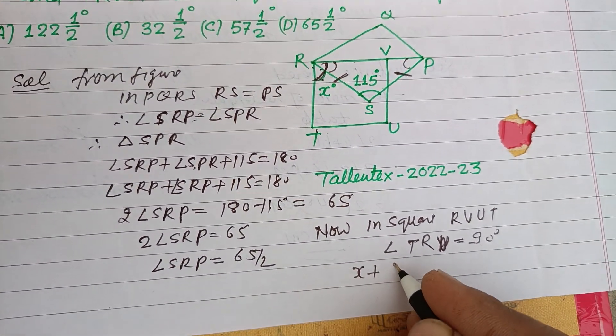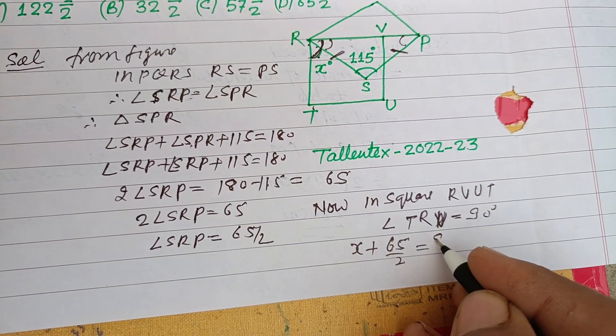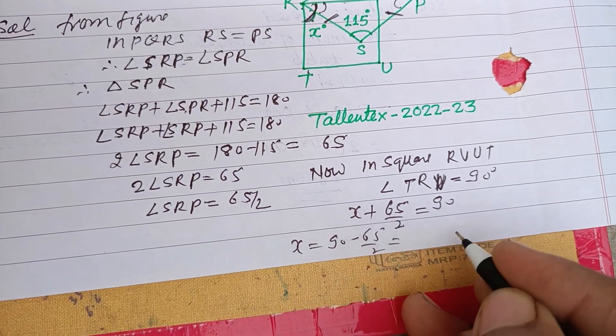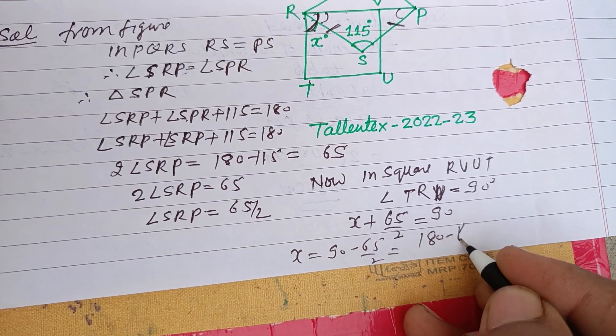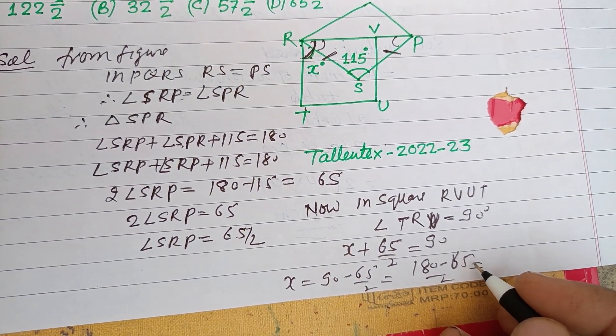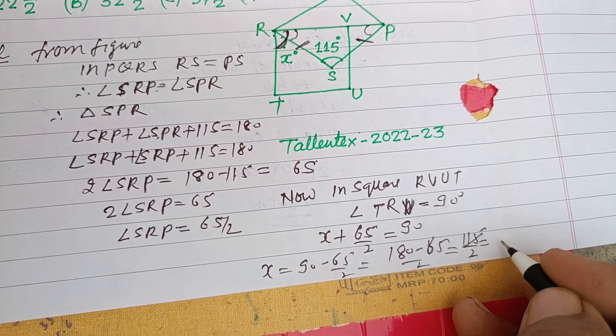Therefore, x equals 90 minus 65/2, or (180 minus 65) divided by 2, which is 115/2, or 57 and 1/2.